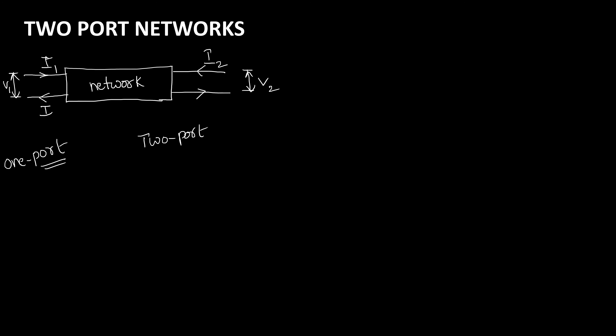Before getting into the concept of two-port networks, we need to remember some important assumptions. The first one is that the voltages and currents inside this rectangular box are not available for you — that is the first assumption.